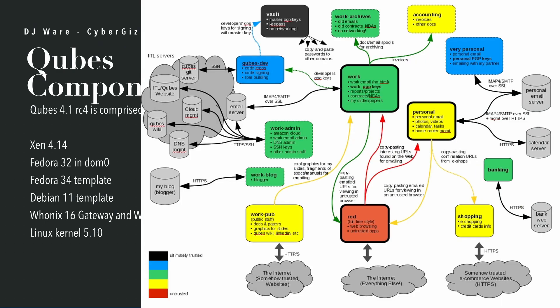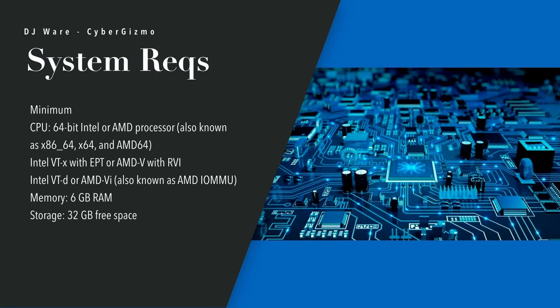This diagram is on their website — you can go look at it in more detail. I put it here to show you some of the different types of virtual machine environments you can have running. The red ones would normally be disposable, and you'll notice work, public, personal, and shopping — those would typically be your application VMs.